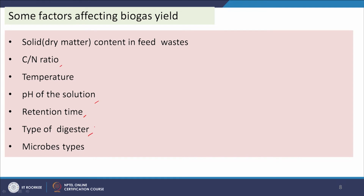Additionally, the type of reactor matters — whether we use an upflow sludge blanket reactor, a simple anaerobic digestion reactor, or any other modified form with superior performance. The type of microbes used also influences performance, since different microbes have different capacities for digestion.